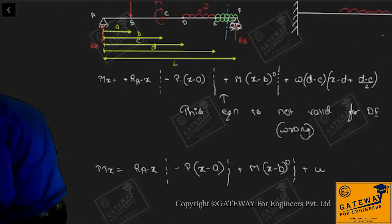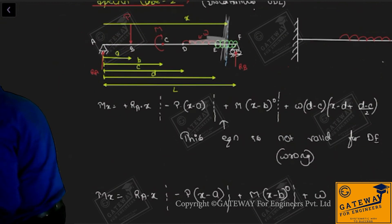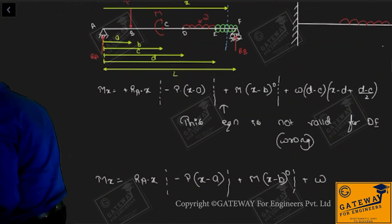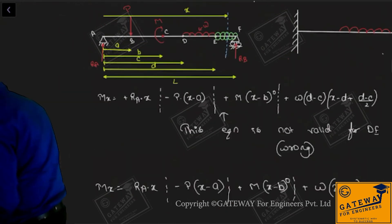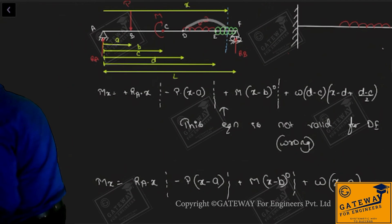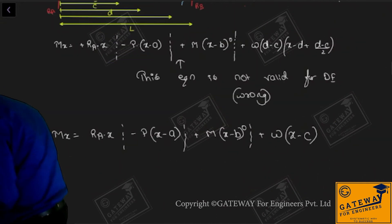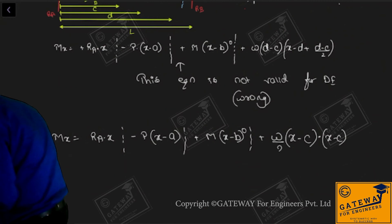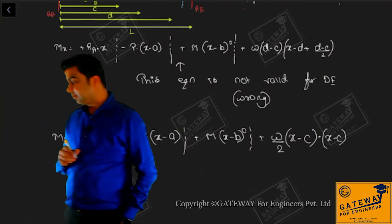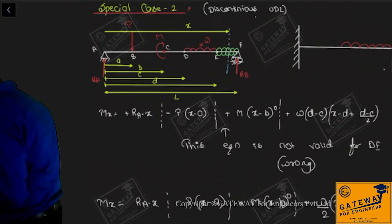Writing the next terms: plus W - the UDL now extended from C to end. The load is W, acting over length (x minus C), so load equals W(x-C). For moment, multiply by its half distance: into (x minus C)/2. So this term is minus W/2 into (x minus C) squared, written as minus W/2 · (x-c)². Then the last term for the opposite dummy UDL starting from D.